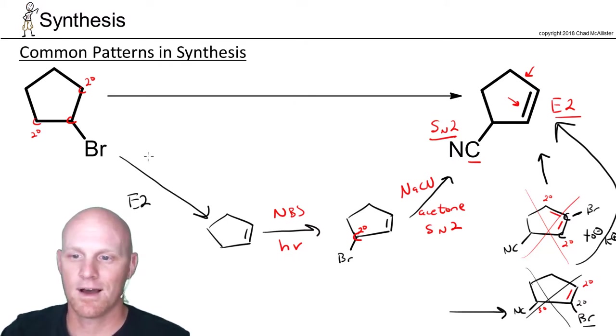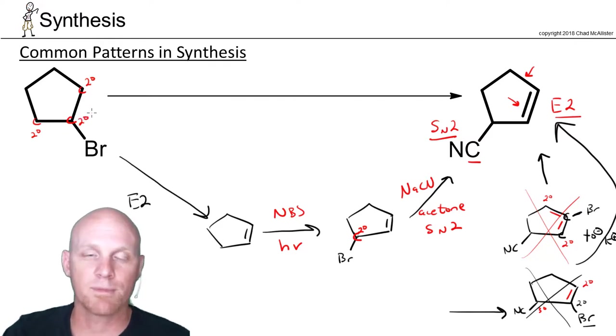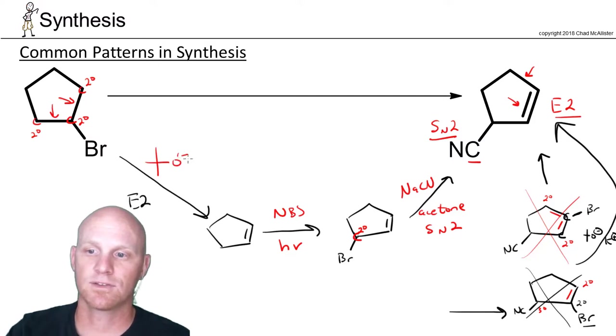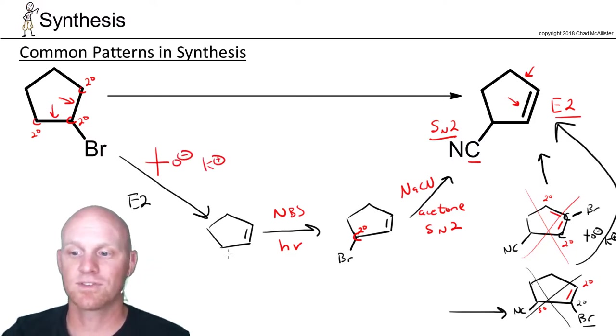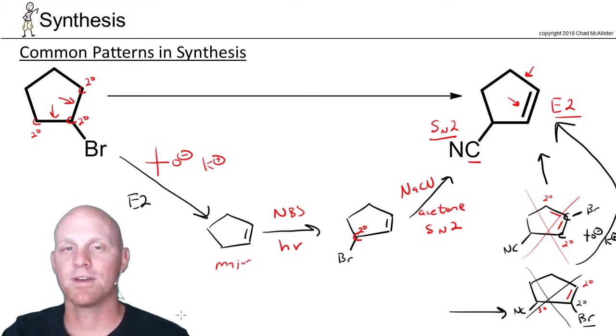And so in this case, being that the leaving group is on a secondary carbon as well, if we want to make sure E2 happens, we should use the bulky base. And the only alkene we can form either way, whether it goes in this location or this location, is the desired one. And so in this case, your bulky base is your best choice. If you didn't use a bulky base, this would still be the major product in that case, but you'd get a minor probably SN2 product as well. So we're going to get a little bit better yield here by using the bulky base for that step.